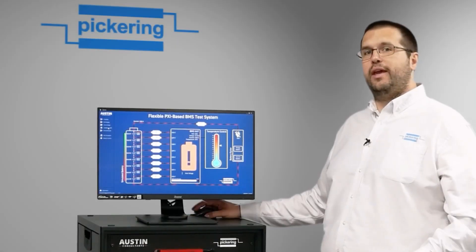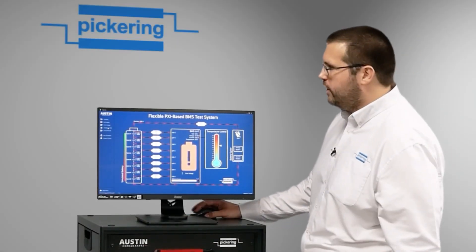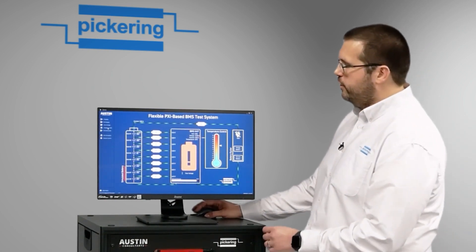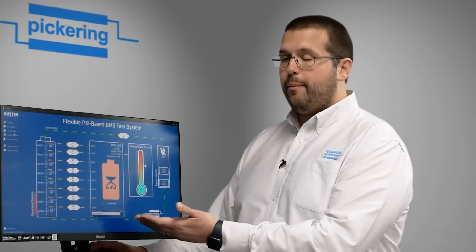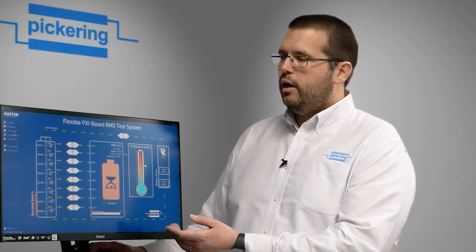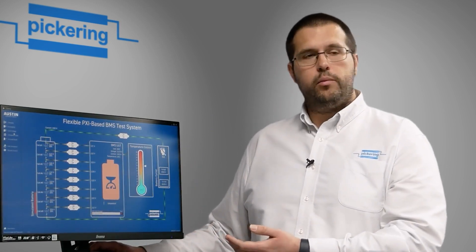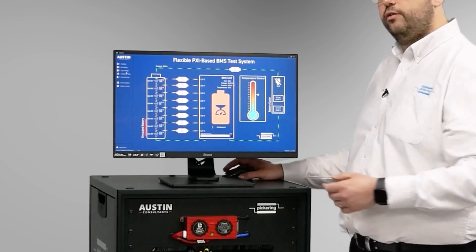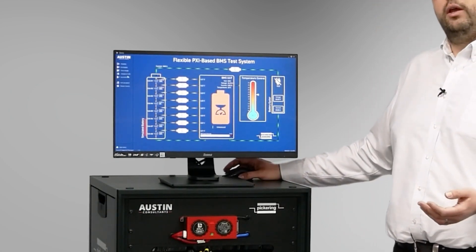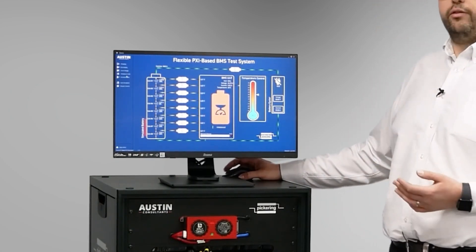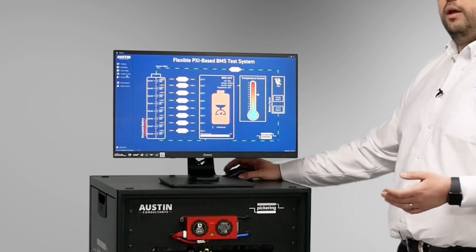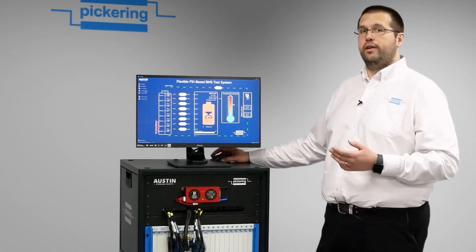The final test condition that the BMS demo can show is for an unbalanced cell situation. If I click on there, you can now see that the BMS is showing unbalanced. This is because each cell is set to 3.22 volts except this one here which is set to 2.25 volts, which is now obviously showing as an unbalanced cell. So again it is showing the correct functionality for this BMS.